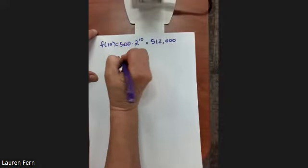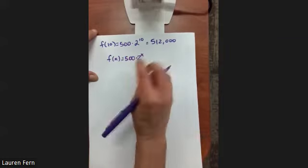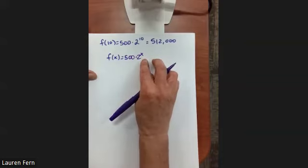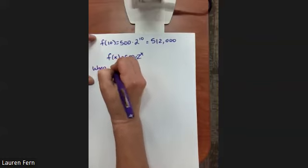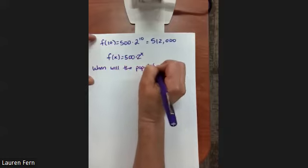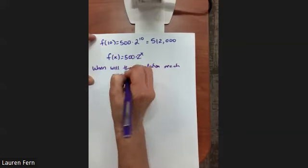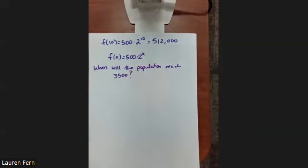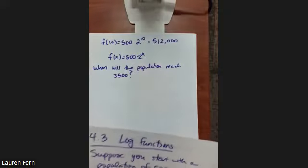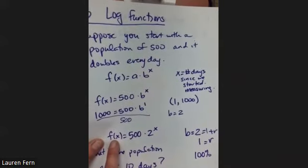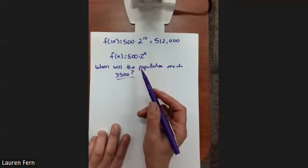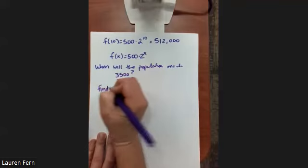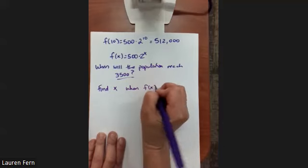We found this equation to be really useful for finding the population after a particular number of days. Now another reasonable question to ask is: when will the population reach 3,500? Notice in our first question, we were given our x value and wanted to find our function value. Now we're given the population and want to know when.